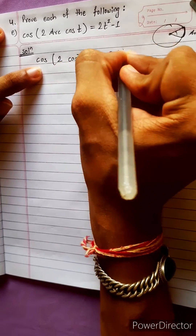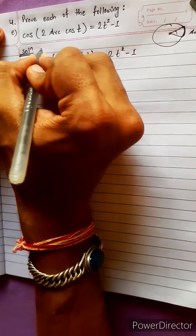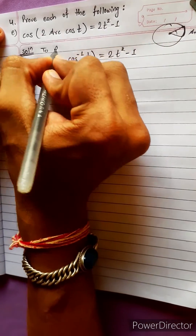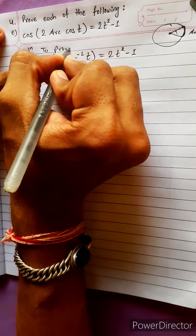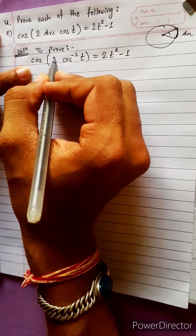Equals to 2t square minus 1. We will have to prove this. To prove.